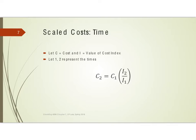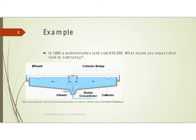The way of using these cost indices is actually very simple — it's simple ratios, no exponents or anything like that. So if you have a cost at time one and you know the index at that time, you can look at the index for today and simply use ratios to come up with the cost for today. Let's look at an example.